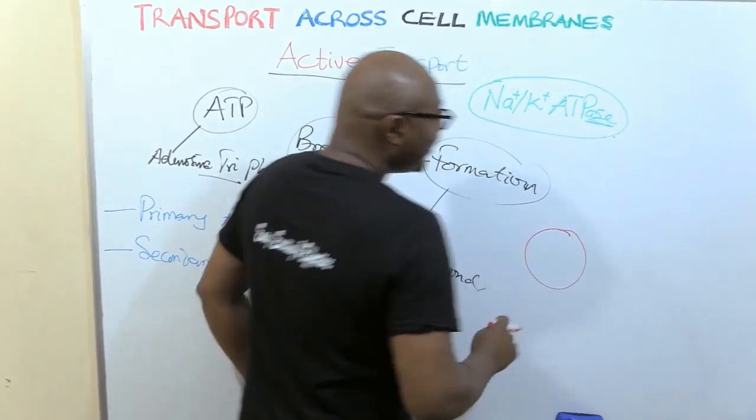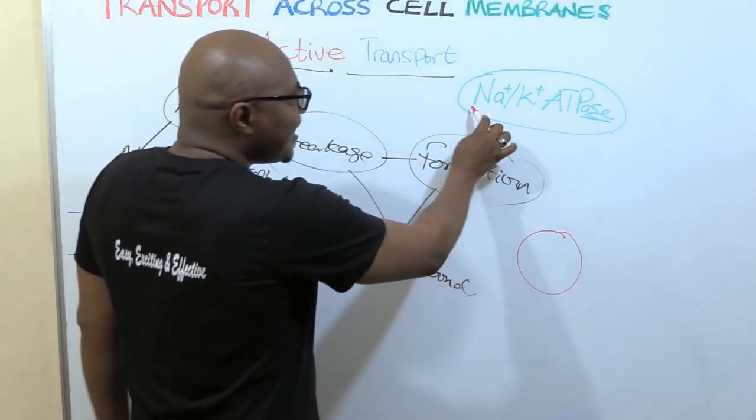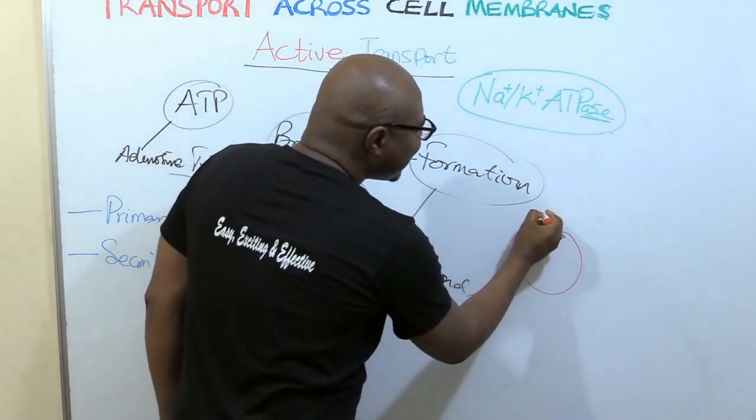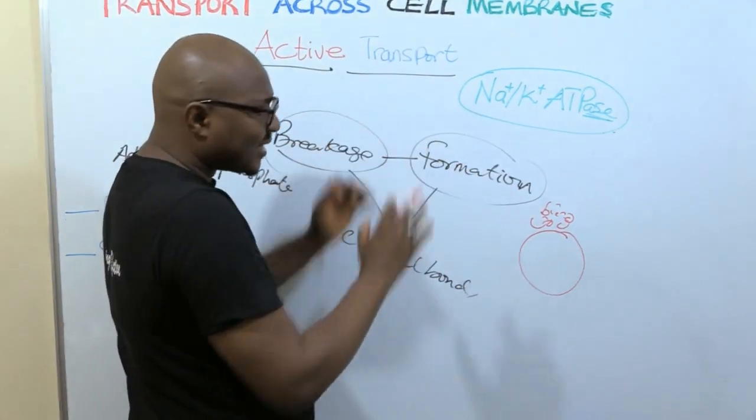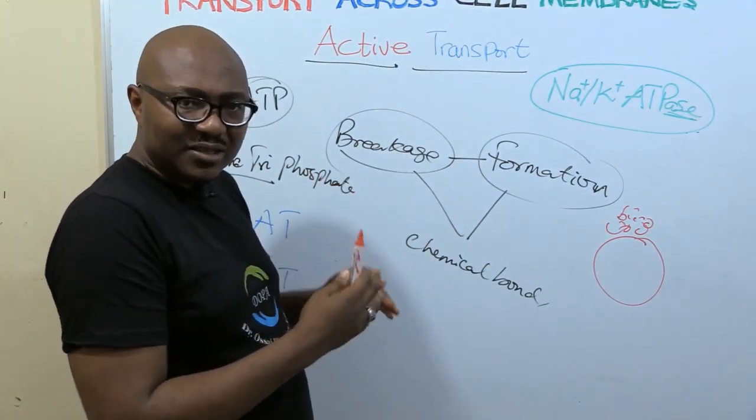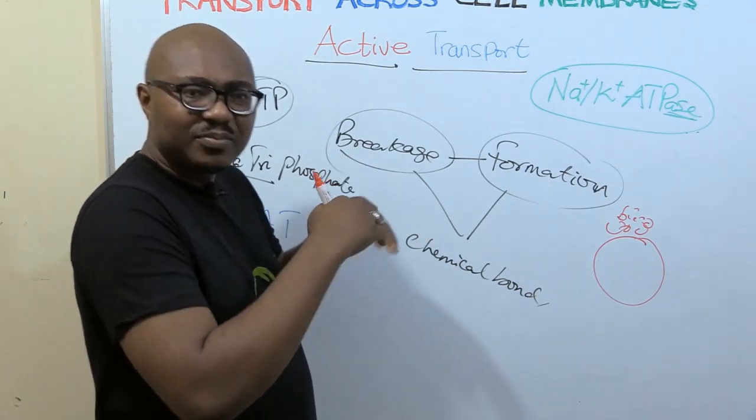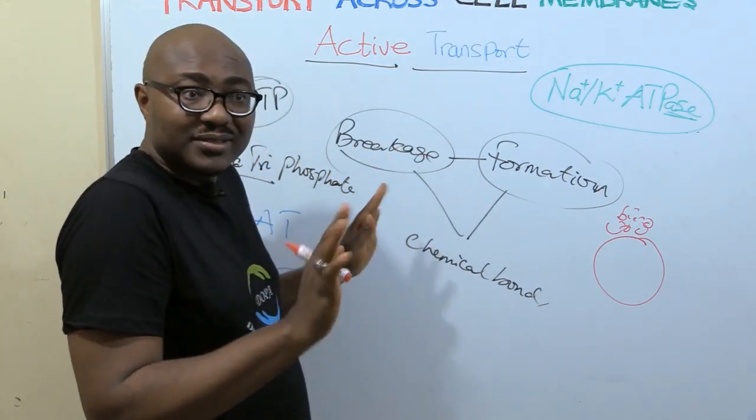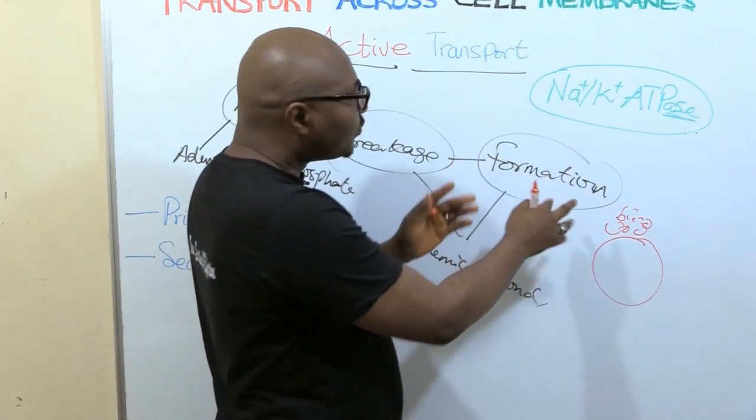Let me explain. They are usually coupled. They depend on the movement of sodium. Now this ATPase, this primary active transport enzyme, has now taken sodium outside the cell. A lot of sodium is now concentrated outside the cell. So remember that sodium has other channels. We talked about channels: sodium channel, potassium channel. They have their normal channel where simple diffusion occurs.